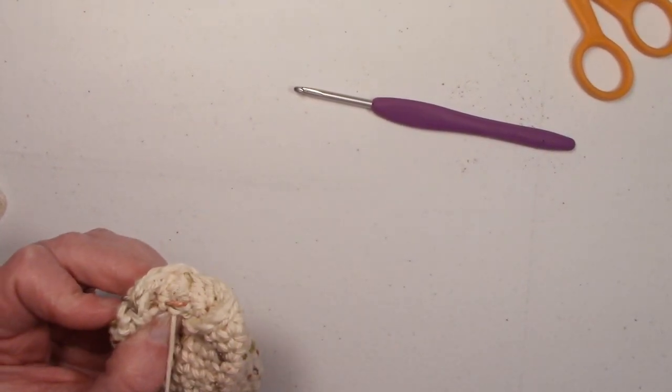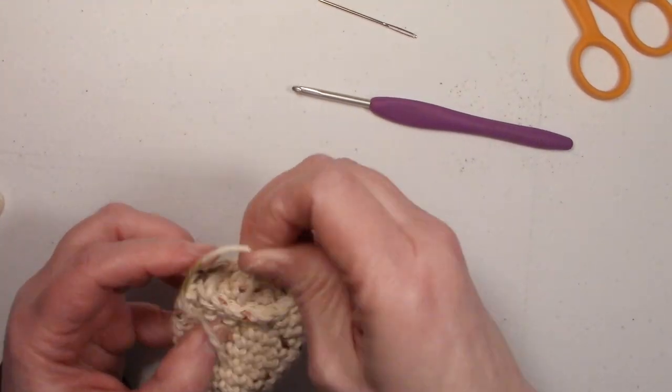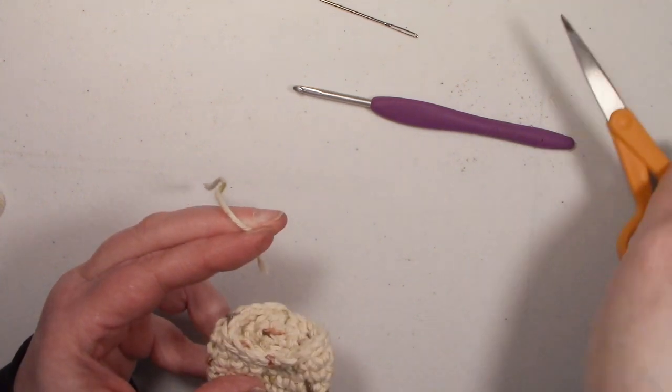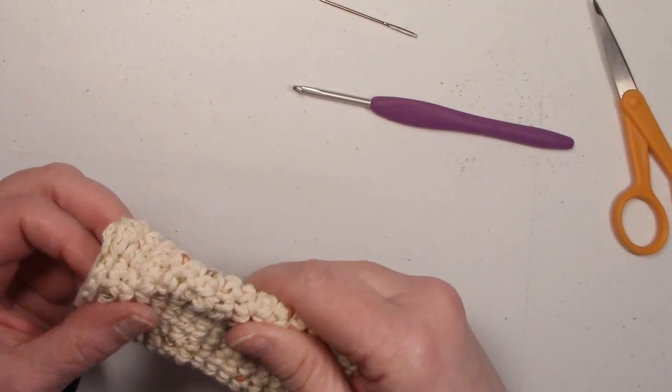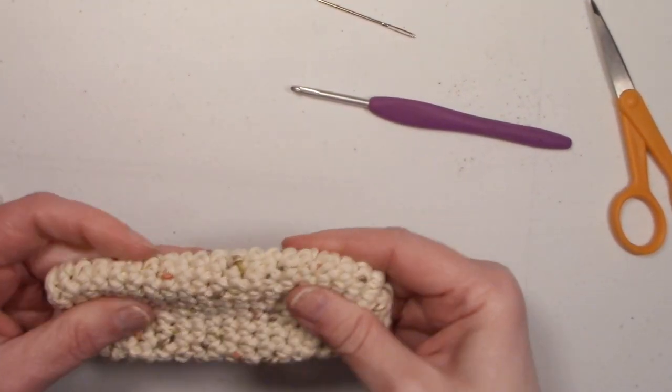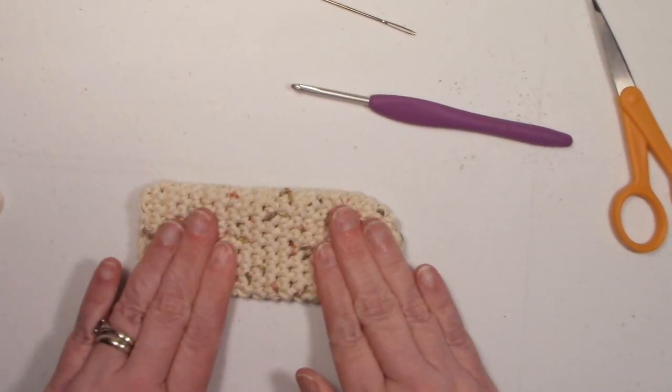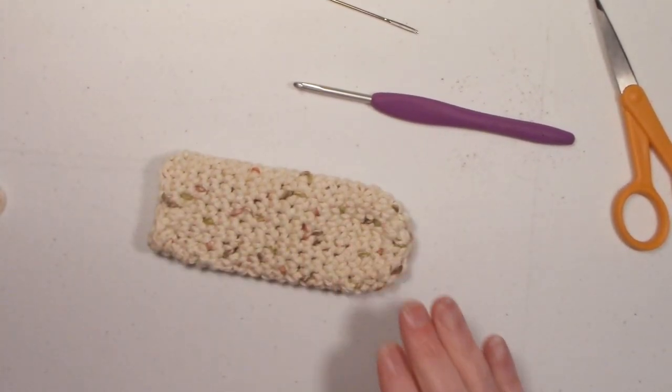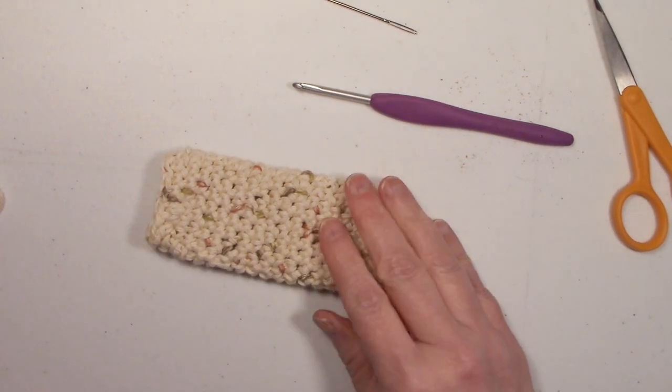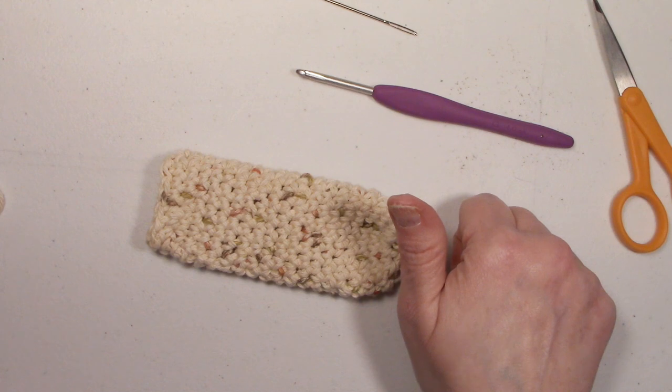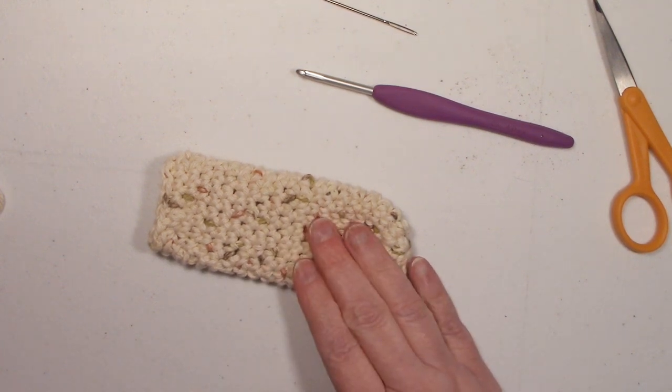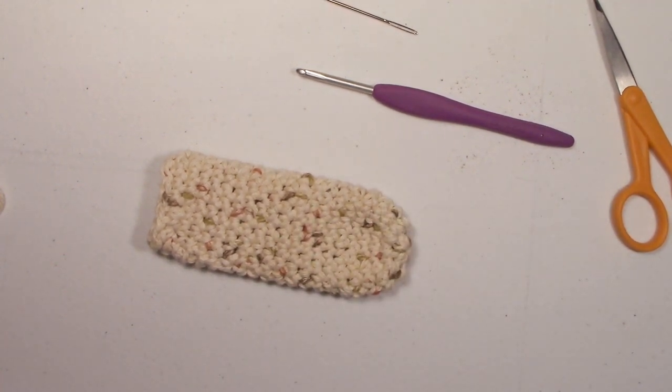Once you have that end secure, you can just go ahead and snip it off. And there is your pot holder for the handle of the frying pan. If you've liked this tutorial, please give it a thumbs up. And don't forget to hit that subscribe button and ring that bell, so you won't miss any of my tutorials. Thank you for watching, and happy crocheting! Bye-bye!